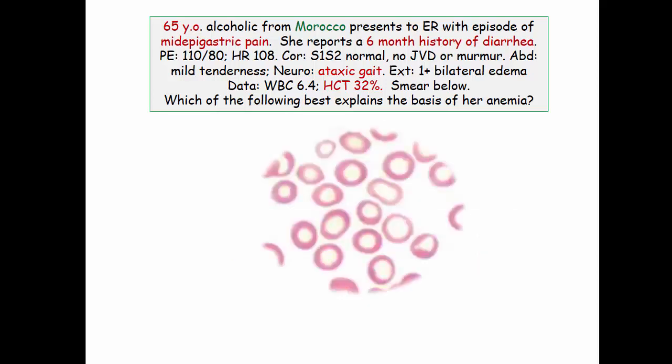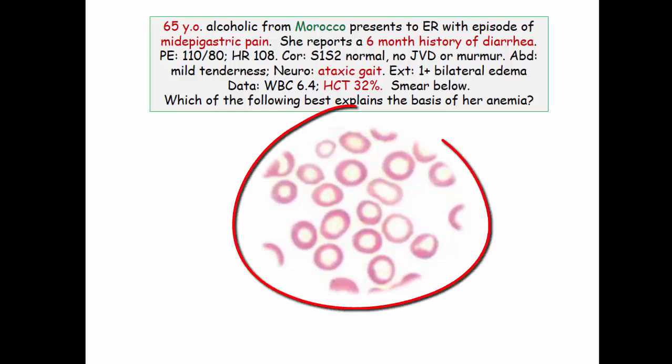Now, here is the key: what are we seeing and what aren't we seeing on the smear? No target cells — goodbye, thalassemia. No macrocytosis — goodbye, B12, folate, and chronic liver disease.